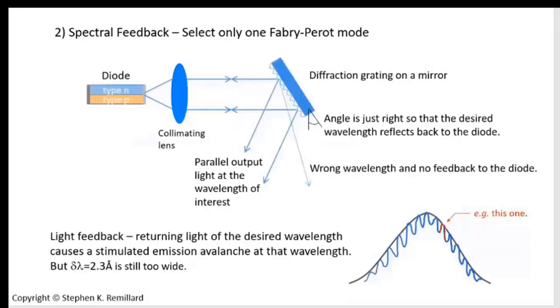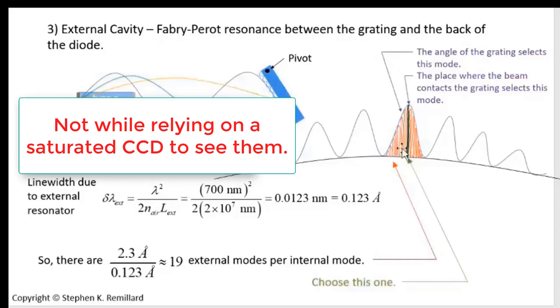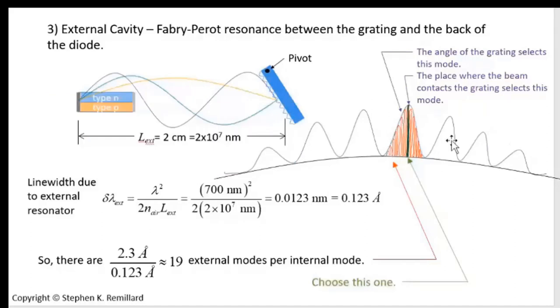I might mention that I don't think we're resolving the external cavity modes. I don't think those are at all detectable by us. We're just counting through these internal cavity resonances, of which there should be around 200 of them within our 40 nanometer range.